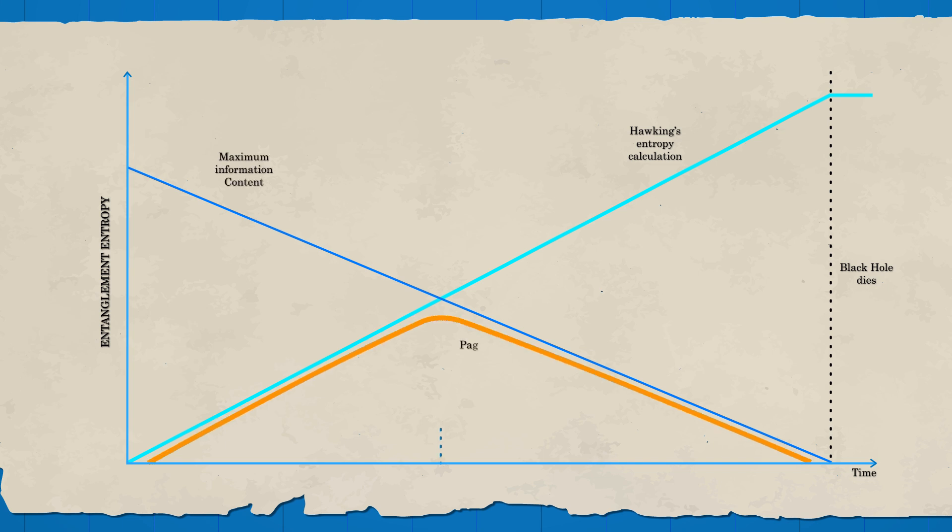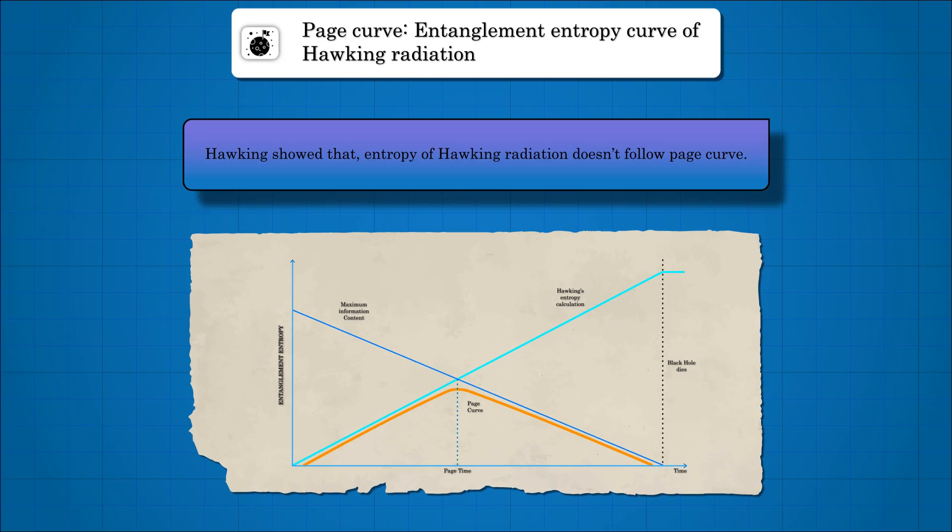One interesting feature of this curve is that we don't have to wait until the end of the black hole to see the paradox. Rather, the mismatch is already at halftime, also called page time.